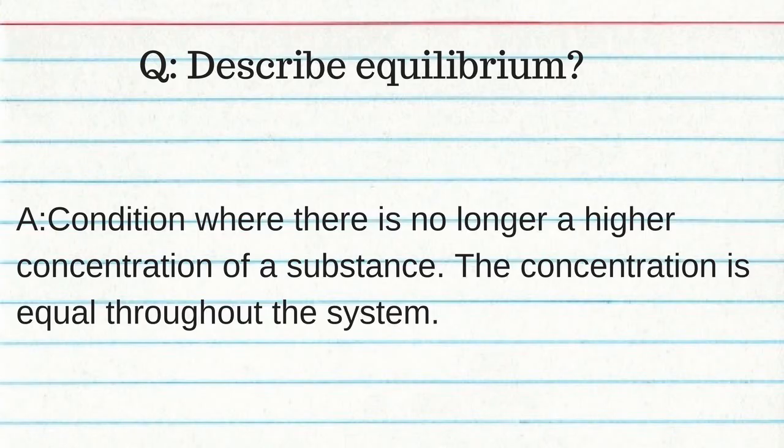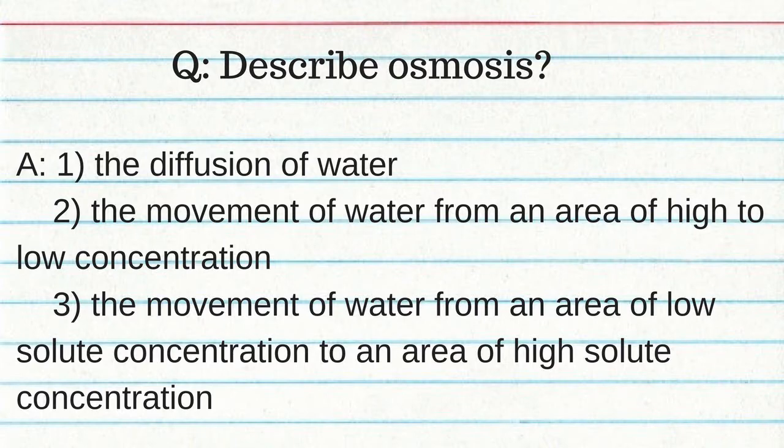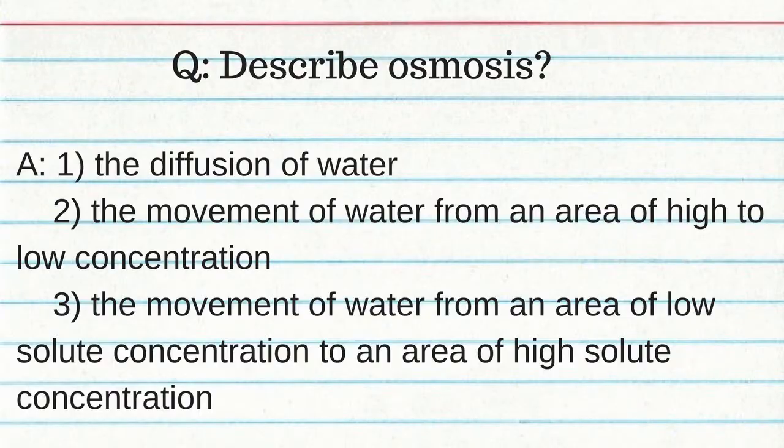Equilibrium is a condition where there is no longer a high concentration of a substance — the concentration is equal throughout the system. Osmosis is the diffusion of water: movement of water from an area of high to low concentration, or from an area of low solute concentration to an area of high solute concentration. A solute is a material that is dissolved. A solvent is a material that can dissolve another material.